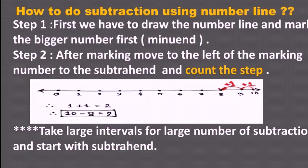What is step 1? In number line subtraction, we can solve in many ways. The easy way — you know that in subtraction there are three terms: minuend, subtrahend, and difference. The minuend is the bigger number from which we subtract. The subtrahend is the number which we subtract from the minuend. And the difference means the result of the subtraction.